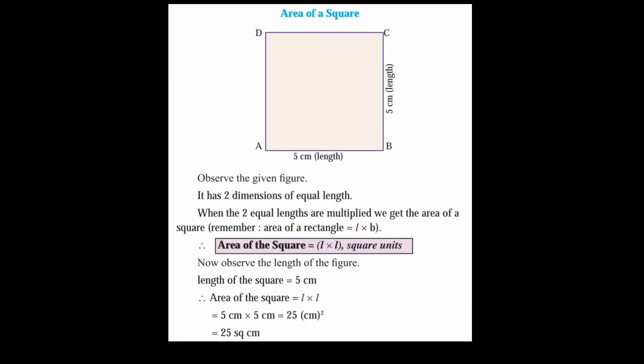Area of a square. Observe the square given in the figure. It has two dimensions of equal length. When the two equal lengths are multiplied, we get the area of the square. So area of square is equal to length into length square units. Unlike a rectangle where we use length into breadth, a square has all sides equal, so we use length into length to get the area of the square.